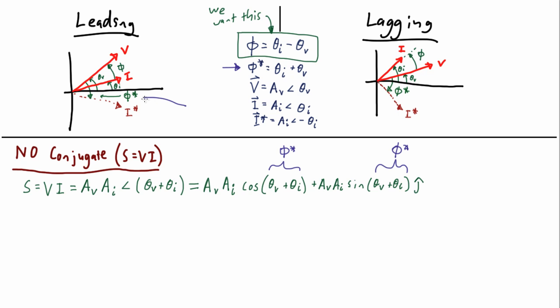doesn't demonstrate the difference between the original voltage and current phasors. So that means this just can't be right, because we need to subtract the angles to get the difference.